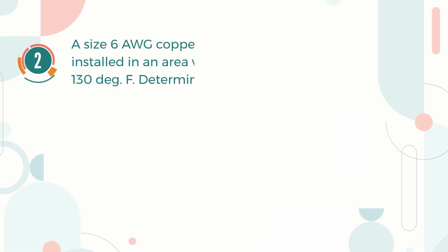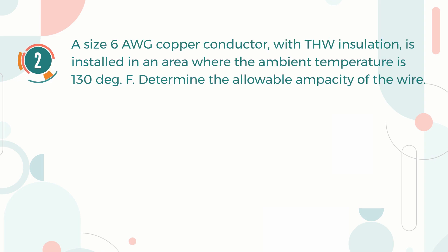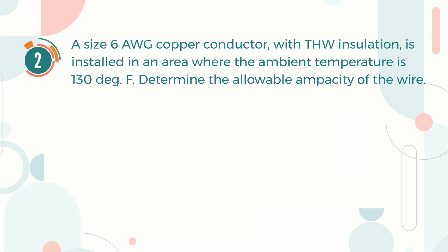Number 2. A size 6 AWG copper conductor with THW insulation is installed in an area where the ambient temperature is 130 degrees Fahrenheit. Determine the allowable ampacity of the wire.